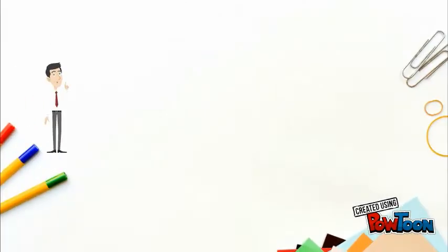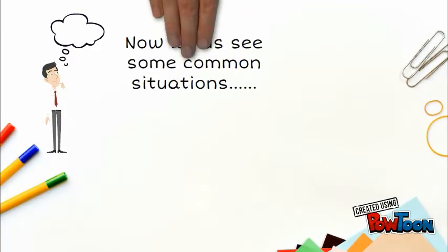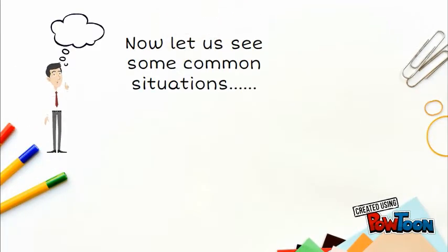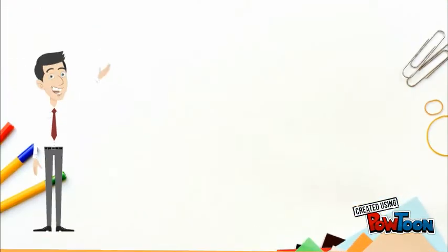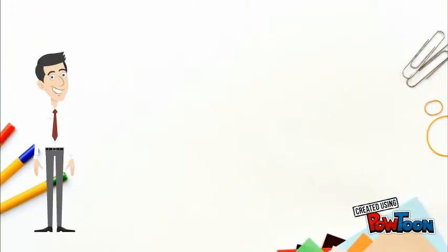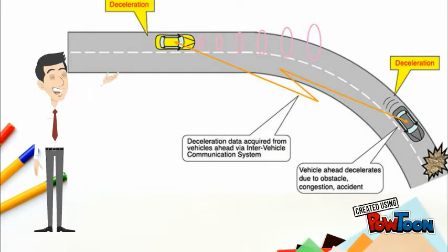Now let us see some common situations where our solution helps in reducing the number of accidents. Here you can see two cars, one yellow and one black. The black car, just after crossing a curved route, accelerates because of some obstacle. But the yellow car may not know this situation and moves at the same speed, which will result in a crash.